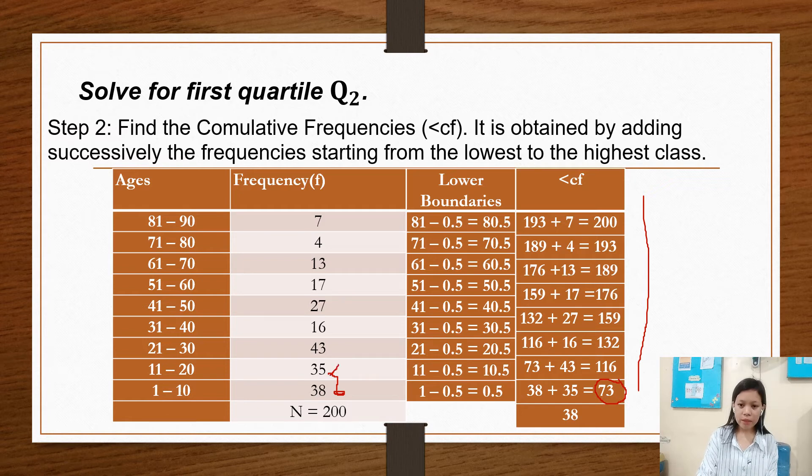And 73 plus 43 equals 116. And 116 plus 16 equals 132. 132 plus 27 equals 159. 159 plus 17 equals 176. 176 plus 13 equals 189. 189 plus 4 equals 193. And 193 plus 7 equals 200.